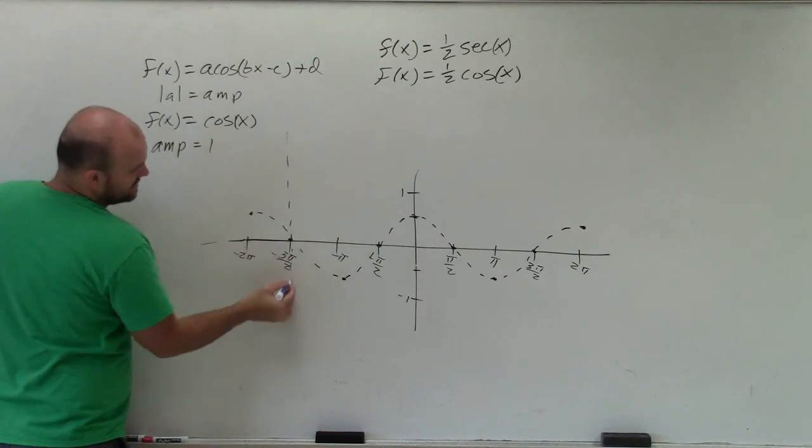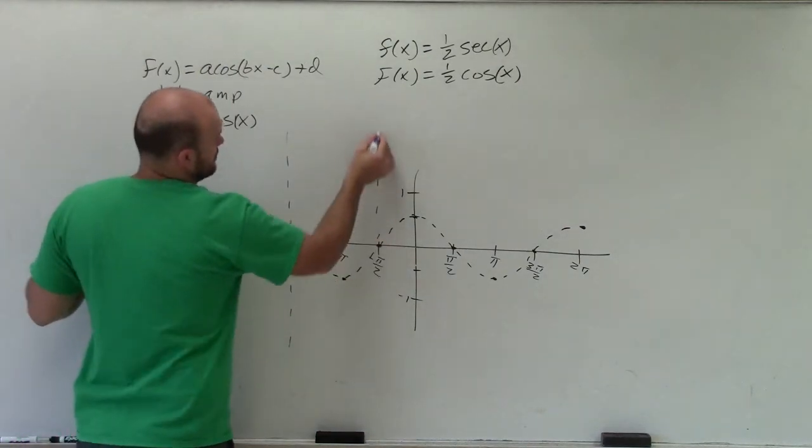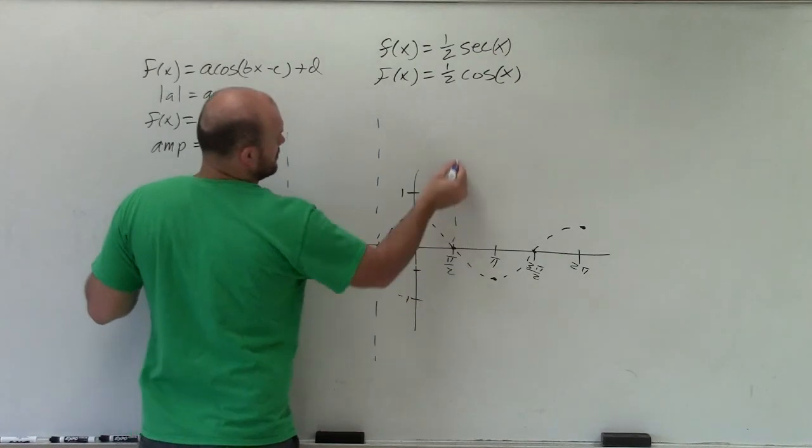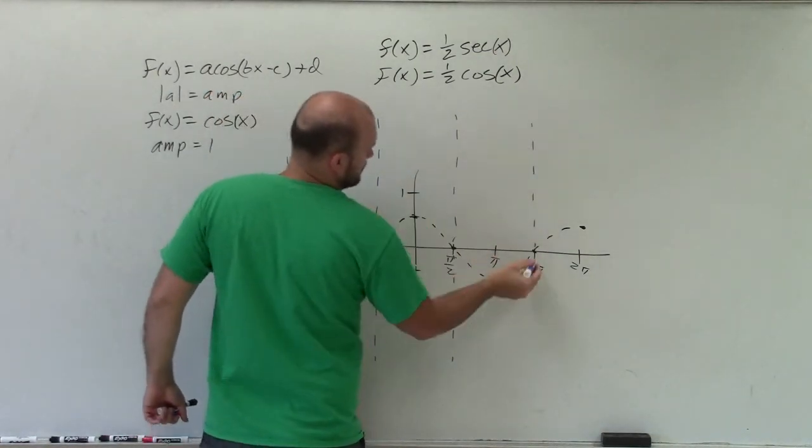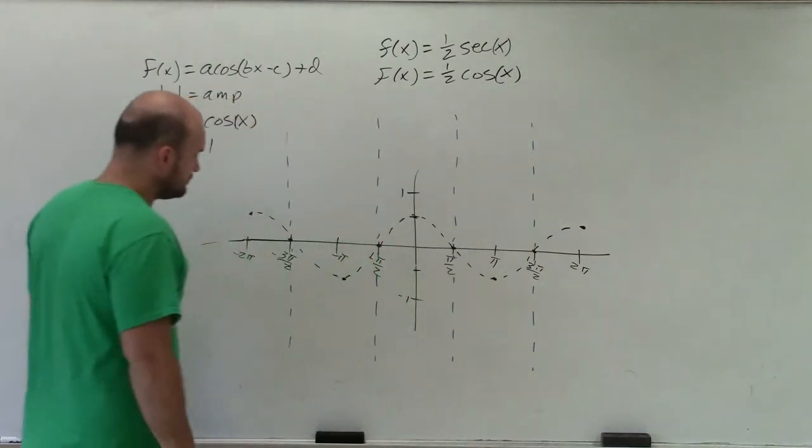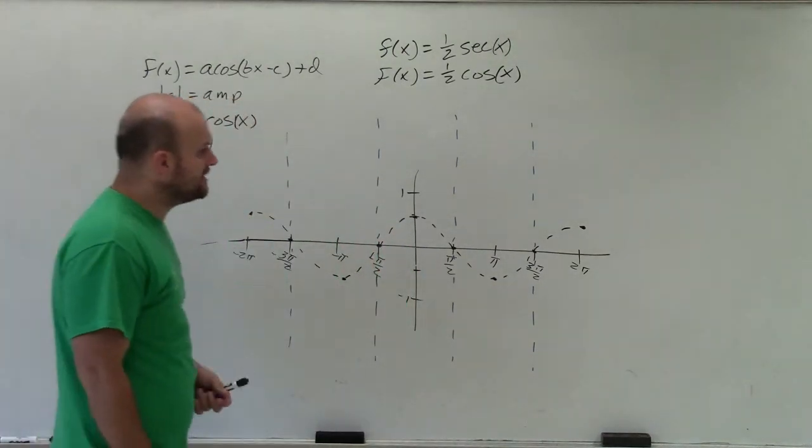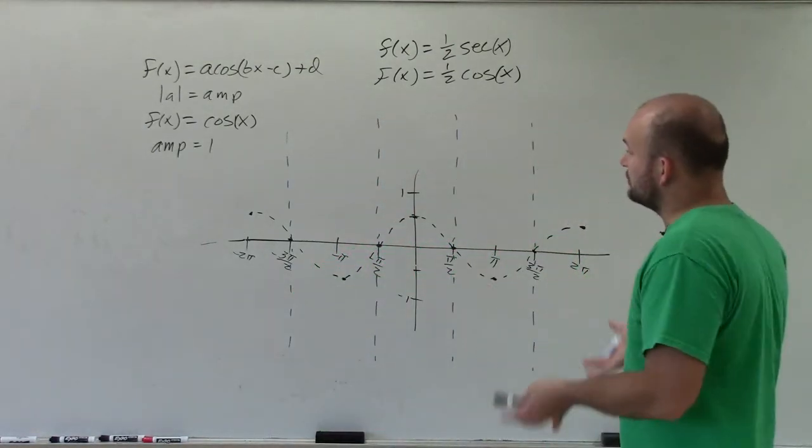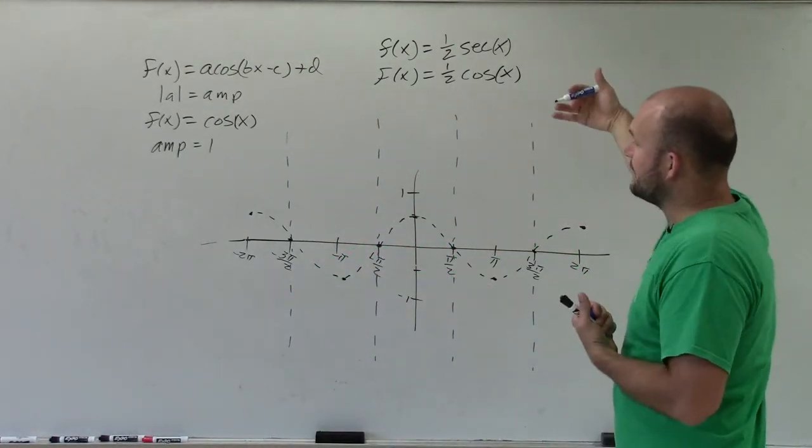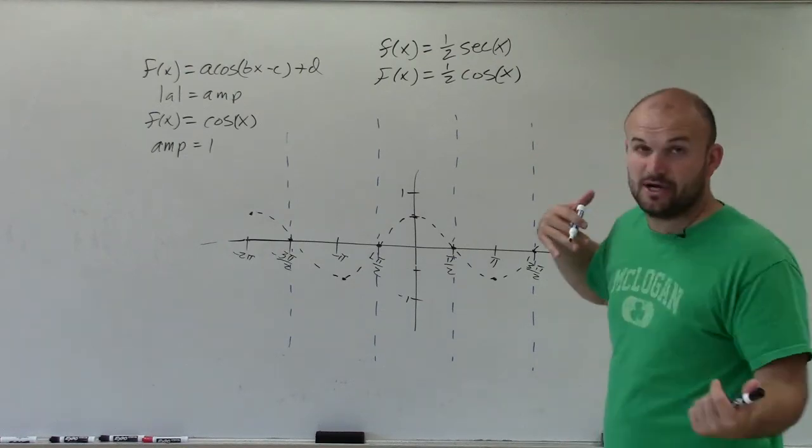So you can see at each one of these cases, my x value, or the y value is equal to 0 for cosine. So at that point, therefore, in the secant it's going to be undefined.